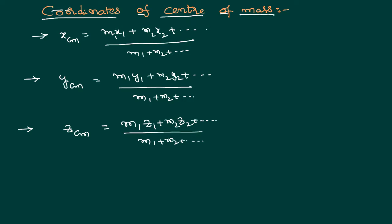So for a one dimensional body, there will be only Xcm. For a two dimensional body, there will be both Xcm and Ycm. For a three dimensional body, there will be Xcm, Ycm as well as Zcm. For a three dimensional body, if someone has asked you what is the centre of mass, we say like this: